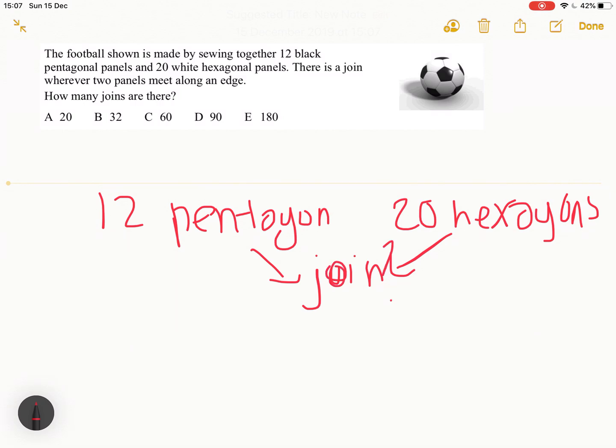We can list all the joins there could be in this football. So we have a join with a pentagon side and a hexagonal side, and then you also have a white hexagon meeting a white hexagon too and there is a join there as well.